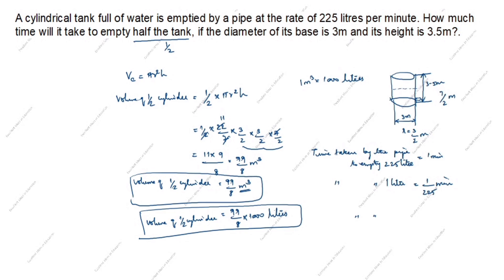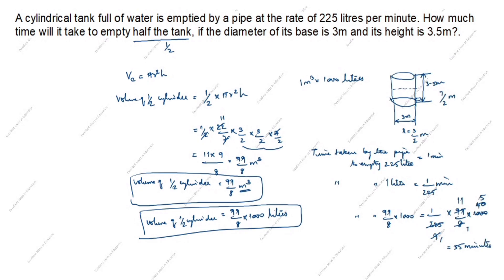Time taken by the pipe to empty 99 divided by 8 into 1000 liters equals 1 by 225 into 99 by 8 into 1000. Calculating: 1000 divided by 225 gives us values, and multiplying through gives 55 minutes. So it will take 55 minutes to empty half the tank.